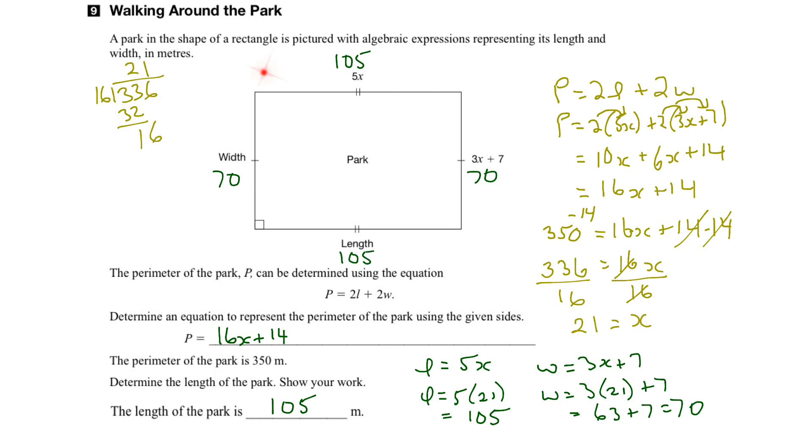So a perimeter means to add up all the sides of the rectangle. So 105 plus 70 would be 175. And then another 105 plus 70, another 175, would add up to the 350. So we know, pretty sure, that we've got the right answer here. And there we go.